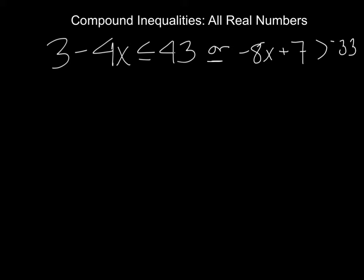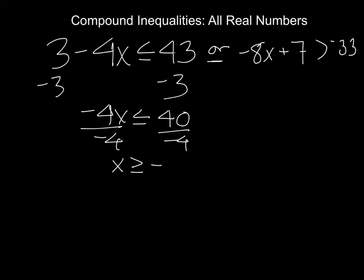We start by solving each inequality separately. So the left one, subtract 3 from both sides, we get -4x ≤ 40. Divide by -4 on both sides. Dividing by negative flips the direction of the inequality, so it's now x ≥ -10.